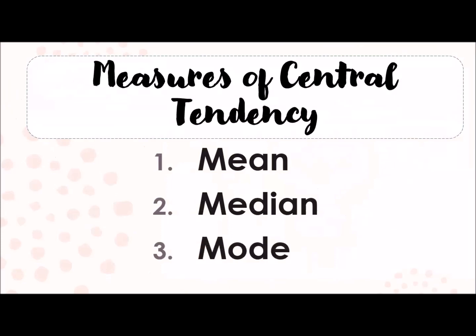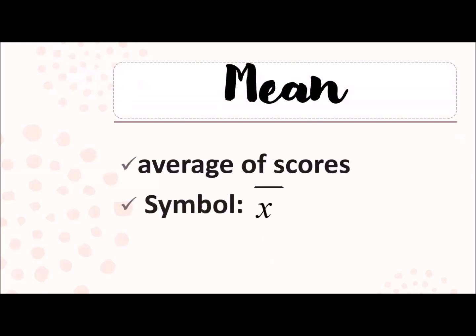So why is it called central? Because as we collect the data, we need to have a central point of view, or what does our collected data mean as one. That's why it's called measures of central tendency. So as we go along, we will talk about the mean, the median, and the mode.